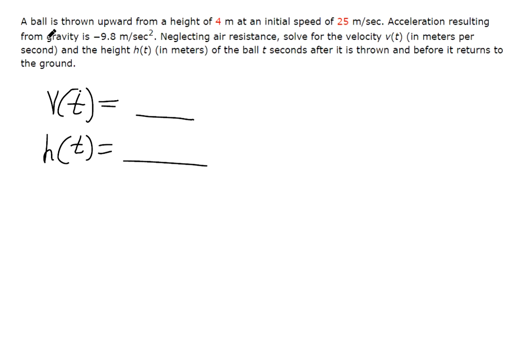Now when we read through the word problem, we've got a ball being thrown upward, initial speed. It doesn't look like it's at an angle, so it's going straight up. Acceleration due to gravity is negative 9.8 meters per second, per second squared we should say.